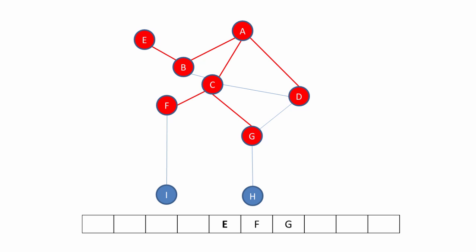E is now at the front of the queue, and it has no adjacent unvisited vertices, so we dequeue E. F is at the front of the queue, and there's a vertex which we need to enqueue. There's nothing else attached to F, so it can be dequeued, which means G is now at the front of the queue. And here we find H. There's nothing else attached to G, so we dequeue it. There's nothing else attached to I, so we dequeue it. And finally, there's nothing else attached to H, so it too is dequeued. Our queue is empty and the graph has been traversed.